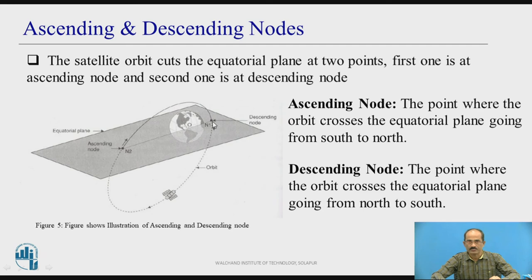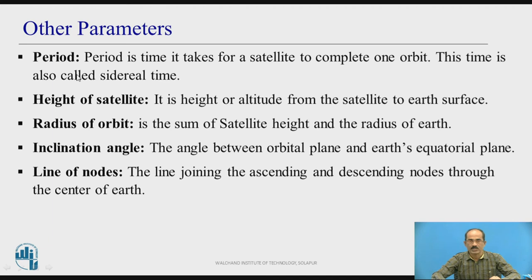Orbital parameters: First is the period, also called orbital period — the time it takes for a satellite to complete one orbit, also called sidereal time. Height of a satellite is the altitude from the satellite to the earth's surface. Radius of orbit is the sum of satellite height and the radius of the earth — from the earth's center to the satellite. Inclination angle is the angle between the orbital plane and the earth's equatorial plane. Line of nodes is the line joining the ascending and descending nodes through the center of the earth.